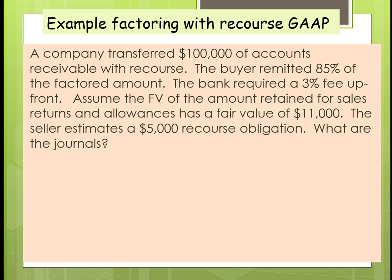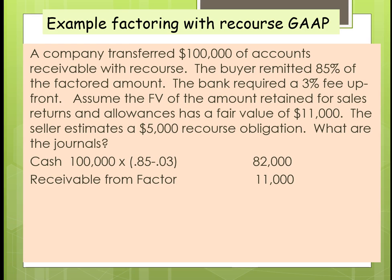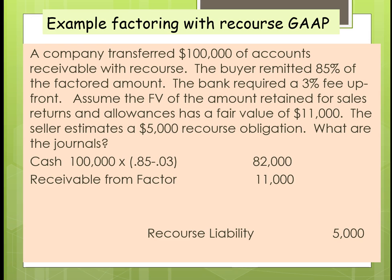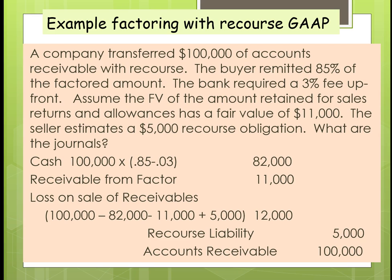What if instead this had been with recourse? In that case, the cash received is still going to be $82,000. The receivable from factor is still $11,000, but now we're going to record the recourse obligation. The accounts receivable comes off, and as you notice, our loss on the sale of receivable goes up by the amount of the recourse liability.